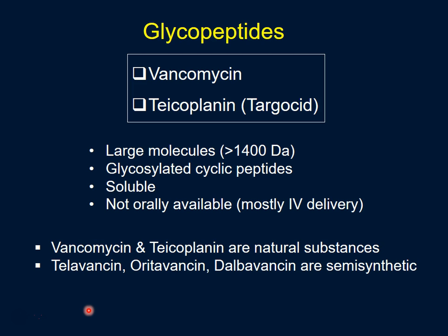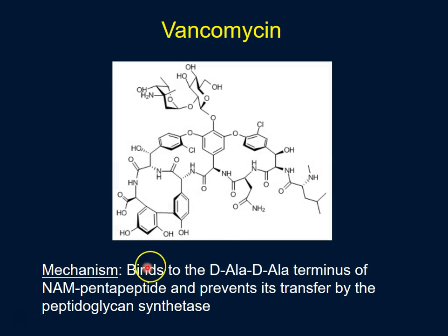They all work by a very similar mechanism. Vancomycin was discovered more than 40 years ago, but wasn't very useful at the time because we had penicillins and penicillinase-resistant penicillins. It also wasn't orally available and had adverse effects. It became more popular once we started seeing very resistant strains of Staphylococcus aureus, particularly methicillin-resistant Staphylococcus aureus (MRSA), as it offered an alternative treatment.